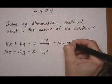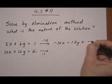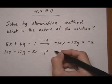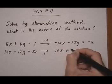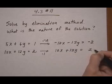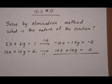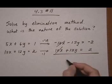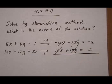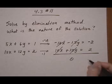And we get minus 10X minus 12Y equals negative 2. And the bottom is 10X plus 12Y equals 2. And let's see what happens. These cancel out. 0. Those cancel out. 0. So the left side is entirely 0.